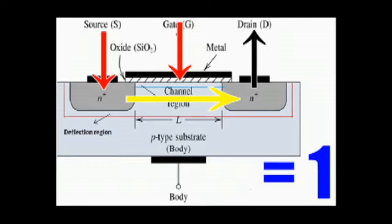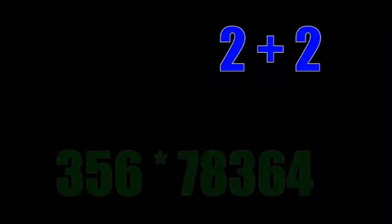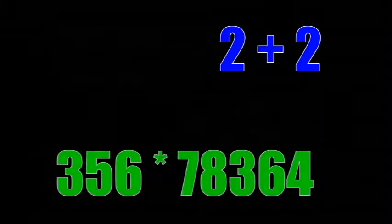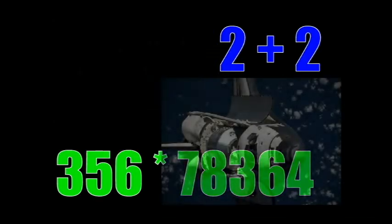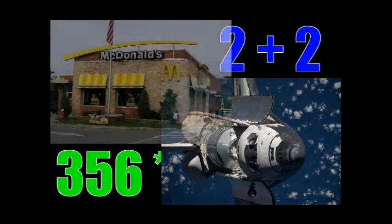When you scale this up to billions and billions of transistors, you're able to generate complex arithmetic calculations, as well as generating huge data streams from input and output devices. Computers use these calculations and data to calculate things as simple as 2 plus 2, 356 times 78,364, all the way up to calculating the orbital trajectory of the space shuttle, or even something as simple as your GPS telling you the fastest way to McDonald's.